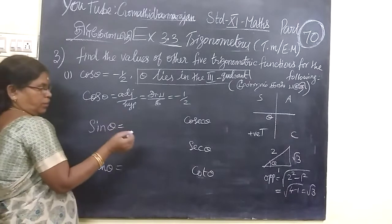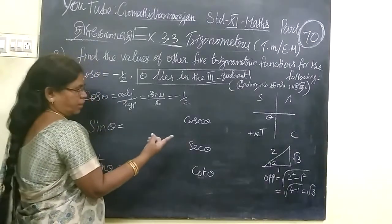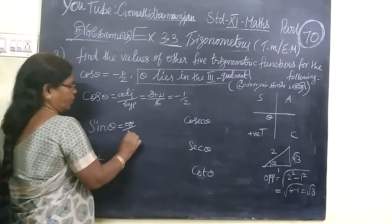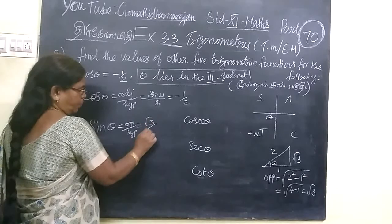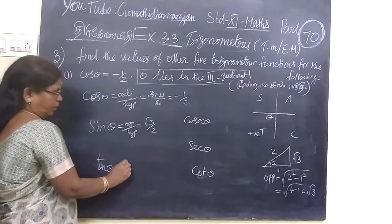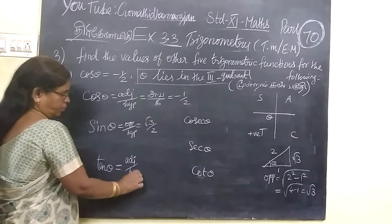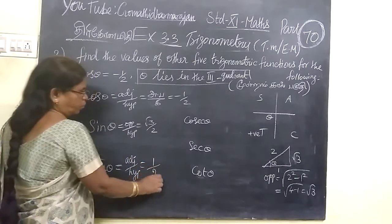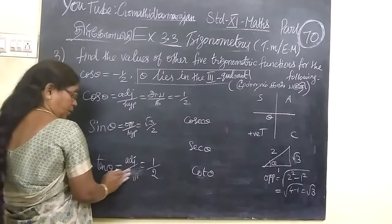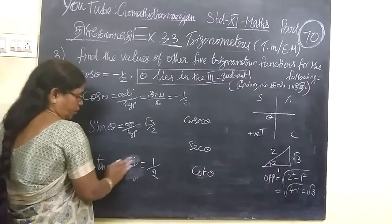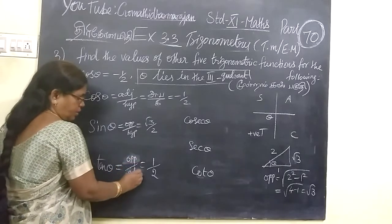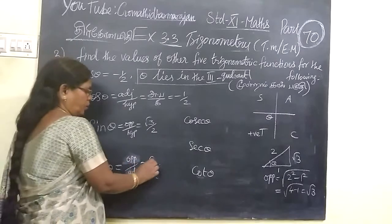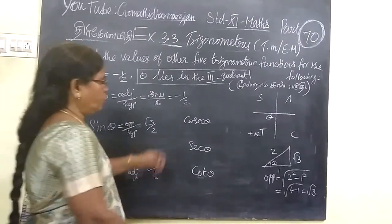If you are trying to get sin theta, opposite by hypotenuse, so opposite is root 3, hypotenuse is 2. Then tan, adjacent by hypotenuse, so adjacent 1, then hypotenuse 2. Correct, sorry, hypotenuse is—opposite by adjacent. Opposite is root 3, adjacent is 1.